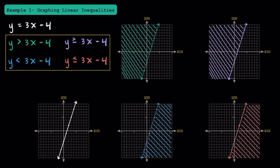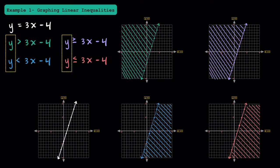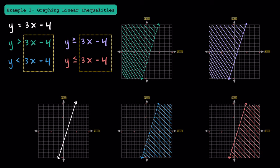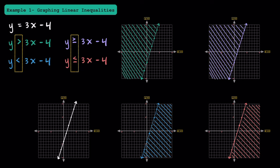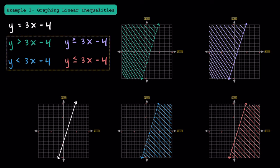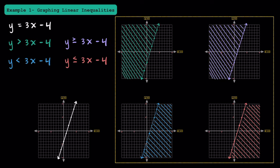Now let's take a look at these linear inequalities. Notice how they all have the y isolated on the left side, as well as the same 3x minus 4 on the right side. However, instead of an equation sign, they all have different inequality symbols: greater than, less than, greater than or equal to, and less than or equal to. Making sure you understand the similarities and differences between these symbols will help you graph linear inequalities much easier. In terms of the actual line that you draw for each of these linear inequalities, it's important to know that they all have the same line as a linear equation.